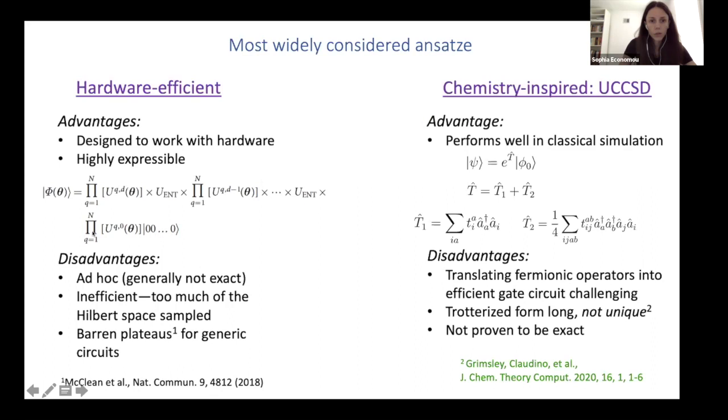And it's pretty general, so presumably it can encode many different solutions of many different problems. On the other hand, it's ad hoc. So even though it's quite expressible, it's not guaranteed to be exact. It can be inefficient because to reach the state you're looking for, you might need to use too many of these gates. And there's also been this very interesting paper showing that for random circuits like this, there are barren plateaus in the optimization landscape.